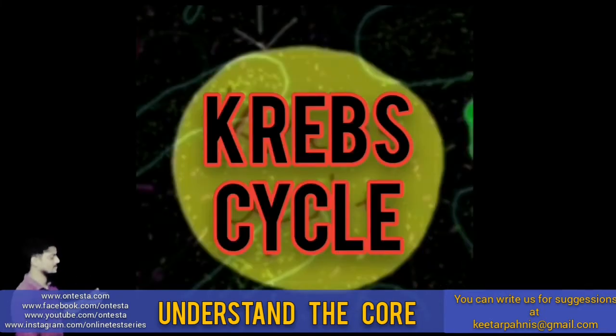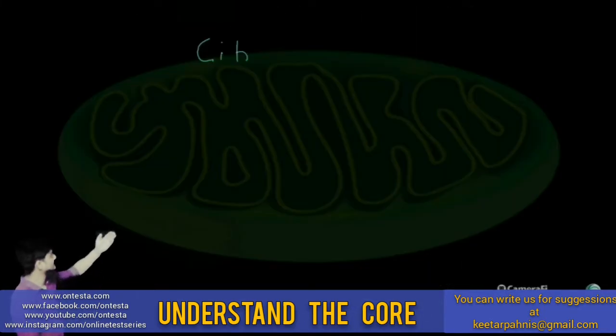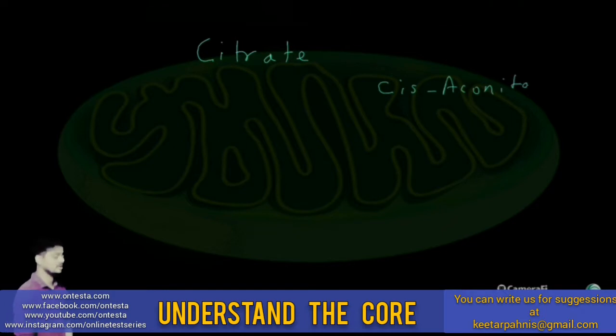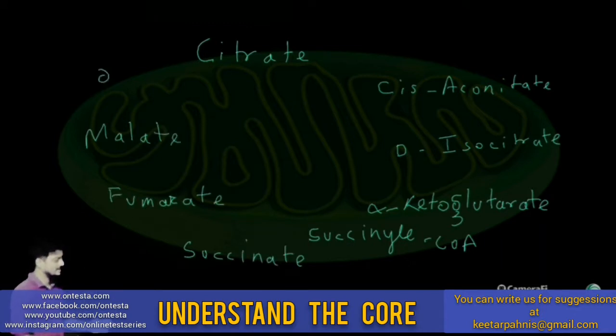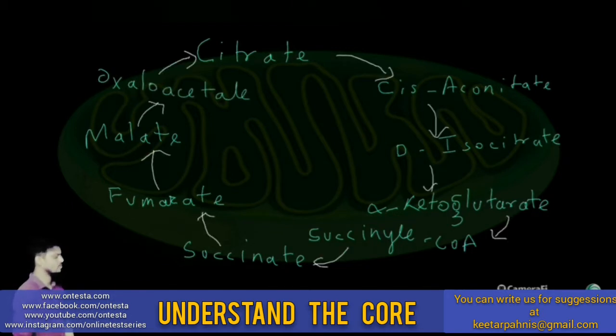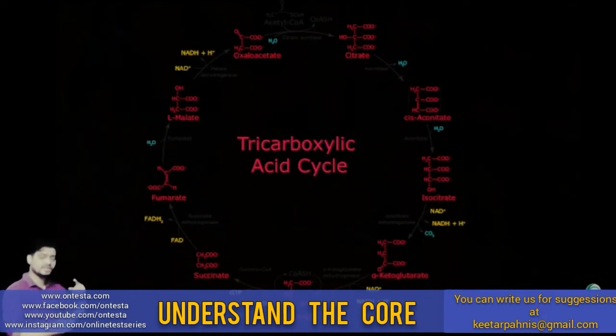Now, let's understand the Krebs cycle in detail. After oxaloacetate combines with the acetyl group of acetyl coenzyme, one molecule of pyruvic acid generates a total of 12 ATPs. While after breaking down glucose molecules, it will generate 2 pyruvic acid. So in totality, 24 ATPs are generated by this cycle. After complete breakdown of glucose, we get 32 to 36 total ATP molecules.